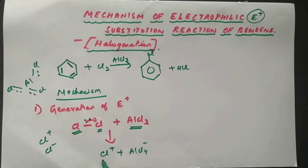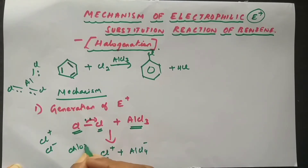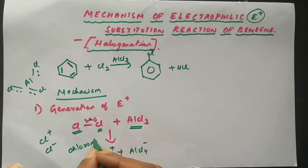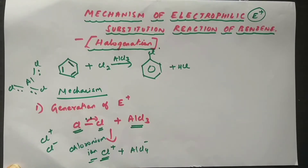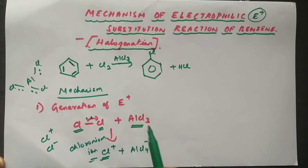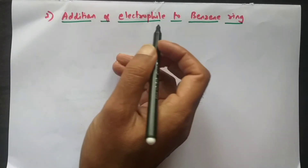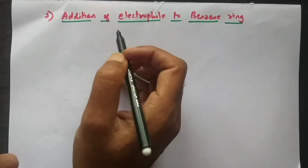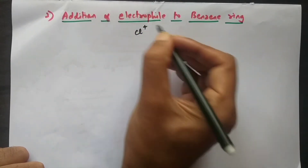So now Cl⁺ will be the electrophile. This completes step one — the generation of the electrophile. The next step will be the addition of the electrophile to the benzene ring.